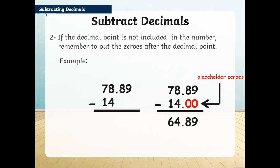We start from the right hand side. 9 minus 0 is 9, 8 minus 0 is 8, then 8 minus 4 is 4, and 7 minus 1 is 6. So our answer is 64.89.